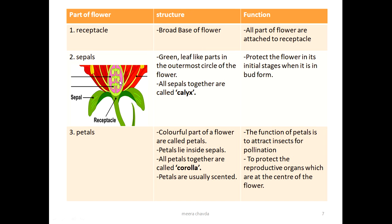The next part is the sepal. Sepals are the green leaf-like parts that form the outermost circle of the flower. All the sepals together are called the calyx, and the calyx protects the flower when it is in its bud form. The third part is petals, which are colorful and lie deep inside the sepal. All the petals together are called the corolla. Petals are usually scented to attract insects for pollination.